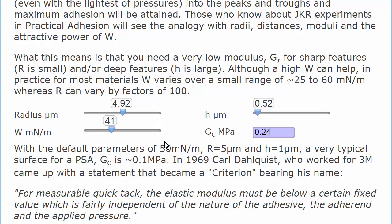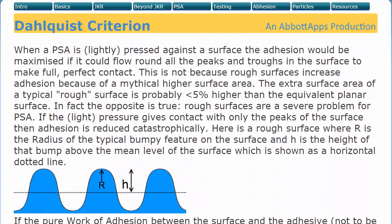If you have a super smooth surface, then you can have a somewhat higher modulus. But for a typical surface, where you've got roughnesses like this, you need to be below that Dahlquist criterion. So that's the first thing you must do.